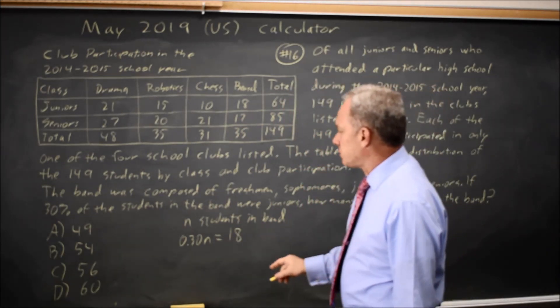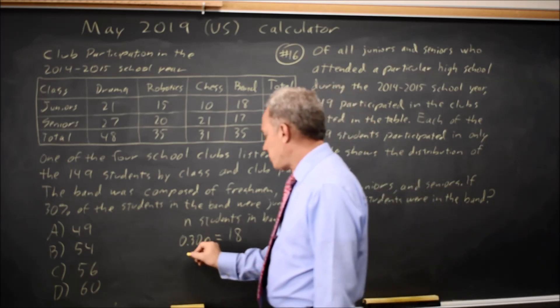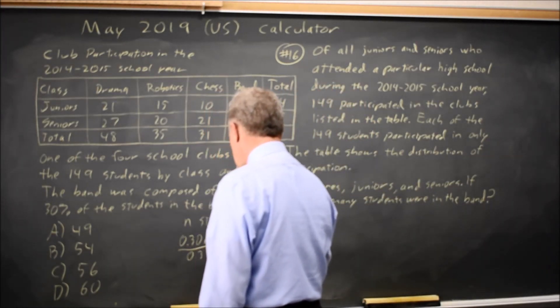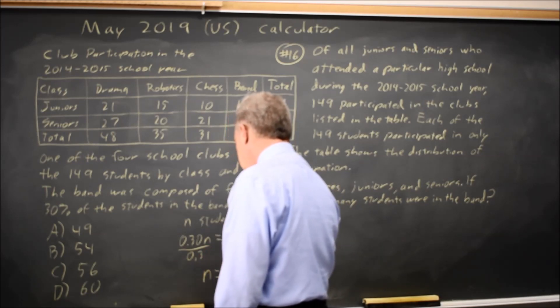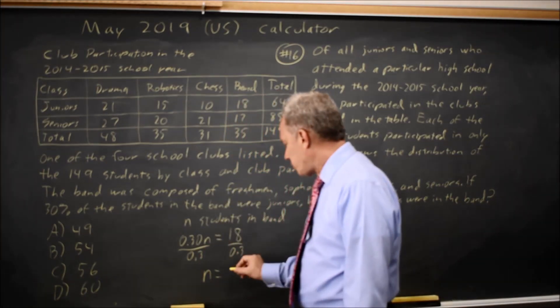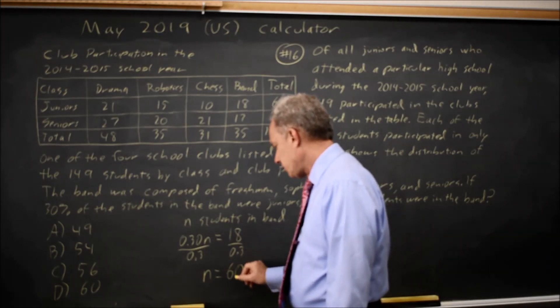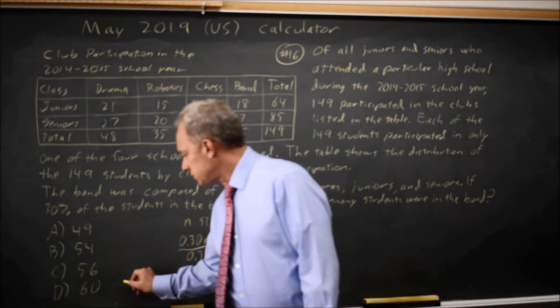And the question is, what is n? If I divide both sides by 0.3, that gives me n equals 18 over 0.3 is 60, which is choice D.